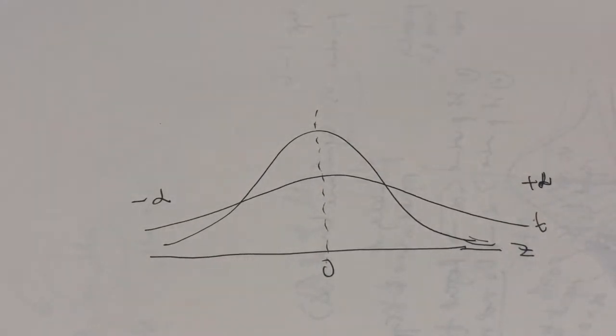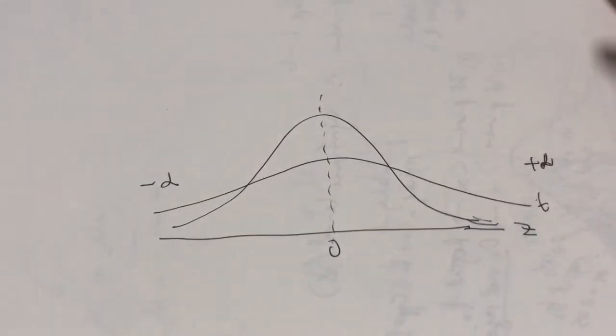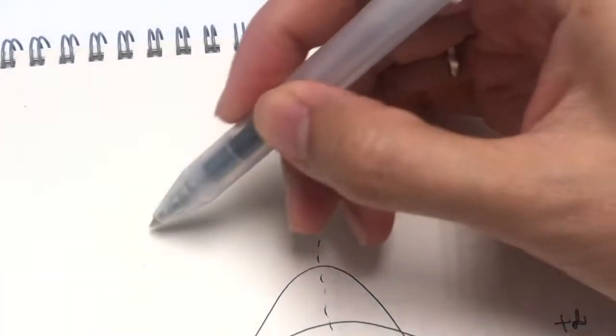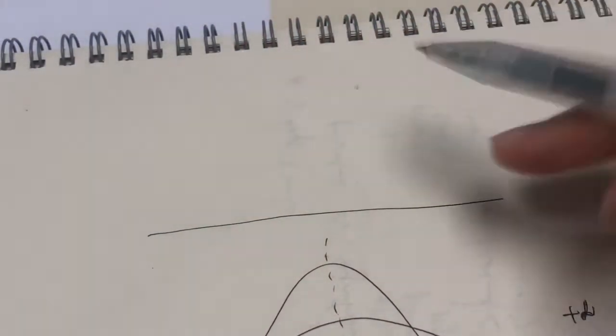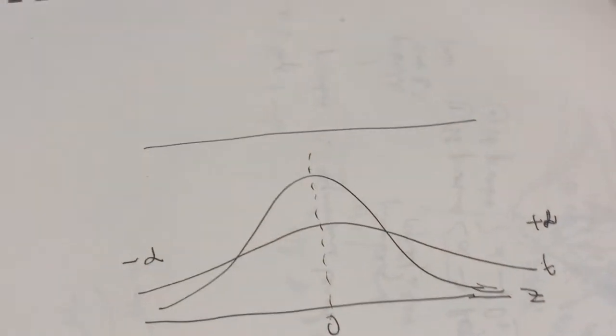Now compared to the Z and the T, this is how the F-distribution looks like. It is positively skewed, guys, meaning it is still continuous, just like the Z and the T.